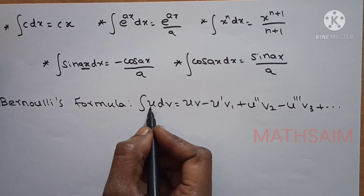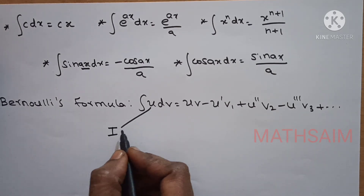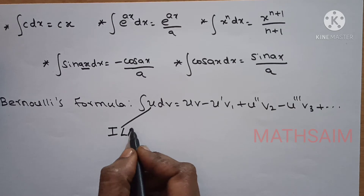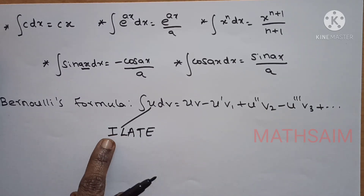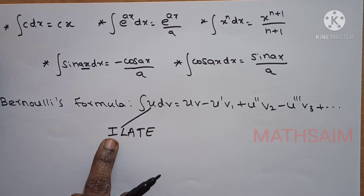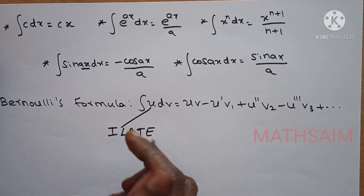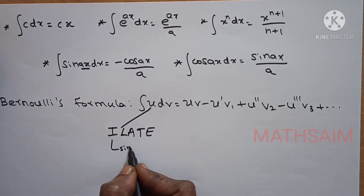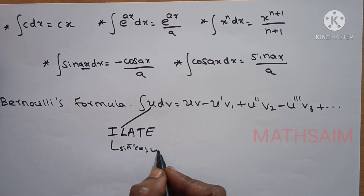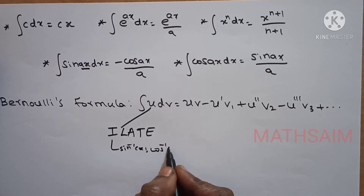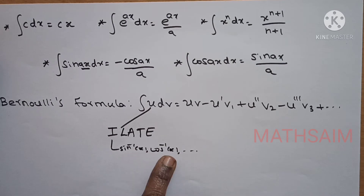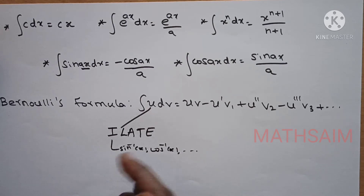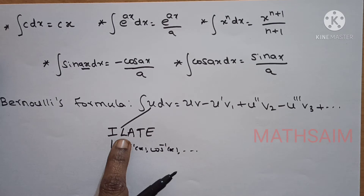So, if we go to select u, use a keyword: ILATE. I-L-A-T-E is like this. If you have inverse terms — for example, sin inverse x — that is the first priority. U should be taken by that. Now, let's say the inverse term is I. What is the next letter? It is L.